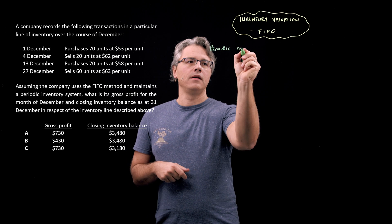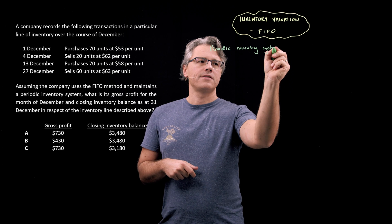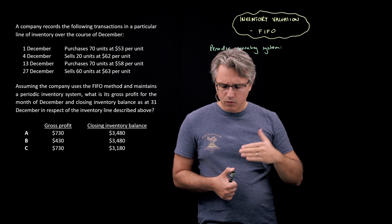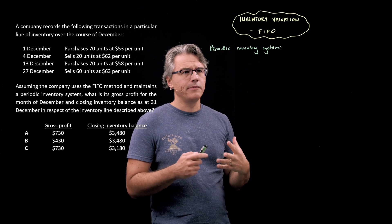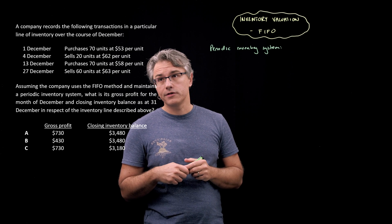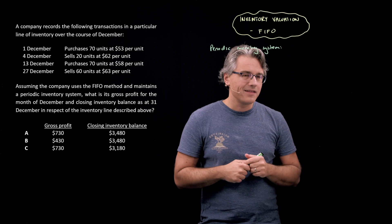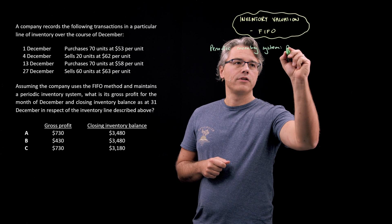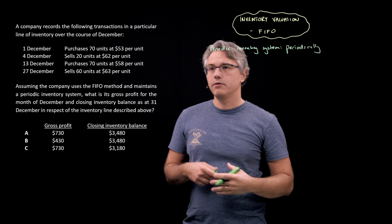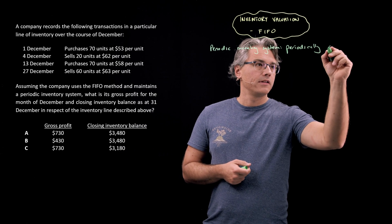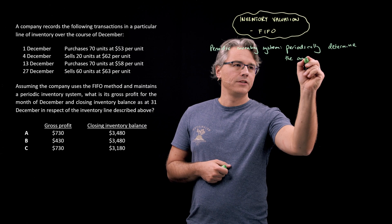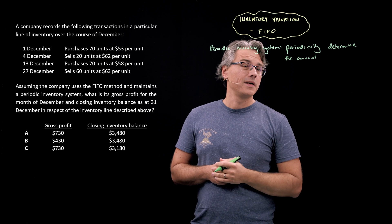A periodic inventory system is one where we periodically — typically at the end of the period, like a month in this case — we periodically determine the amount of inventory. We don't do this on a continuous basis. Later on, in a different question, I'll show you how things differ when we're operating under the assumption of a perpetual inventory system.